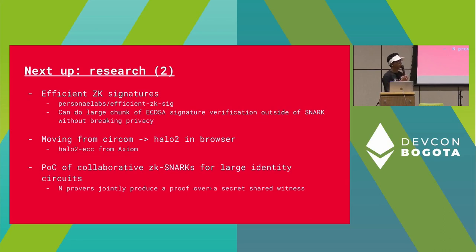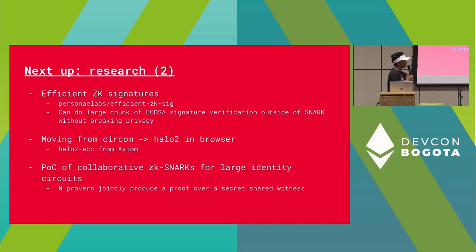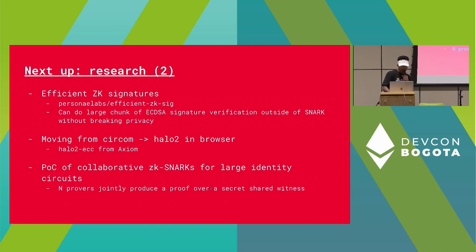We're trying to move from Circom to Halo 2. We're in the process of taking the Halo 2 ECC circuits from Axiom and getting this to work in browser. We're also interested in potentially trying collaborative ZK SNARKs, where n different provers work together to produce a proof over some secret-shared witness. If one of those end users is you yourself, then privacy is preserved by the one-of-n honest prover assumption.